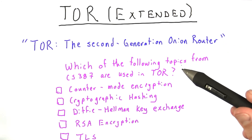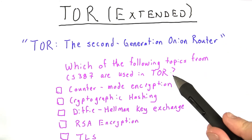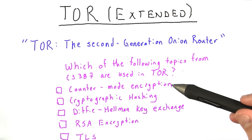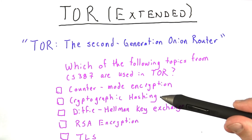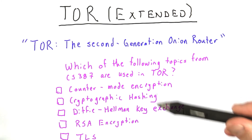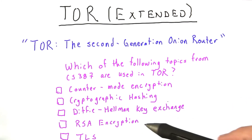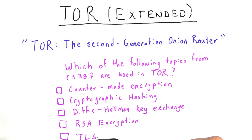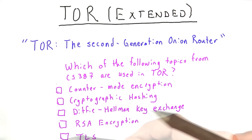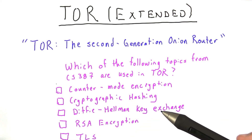Which of the following topics from this class are used in Tor? Counter-mode encryption? Cryptographic hashing? Diffie-Hellman key exchange? RSA encryption? TLS? Check all that apply.